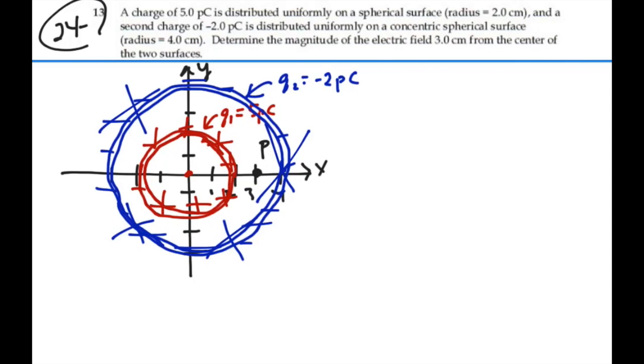So, the charge we're concerned with is just Q1, which is 5 picocoulombs, and at point P, we have an E field that acts like a point charge, which would be equal to KQ1 over R squared.